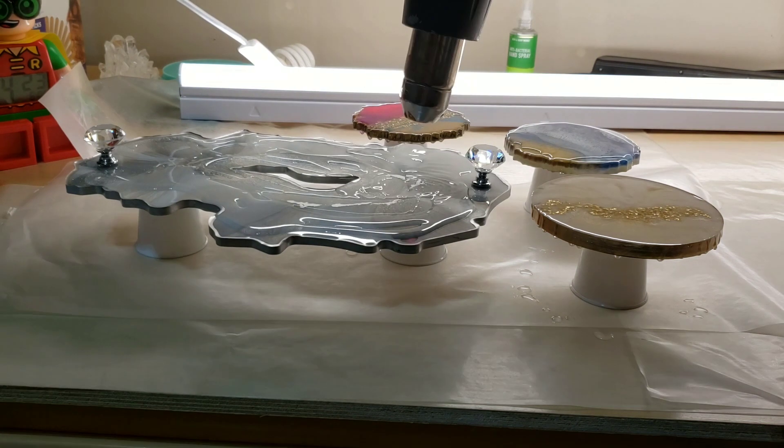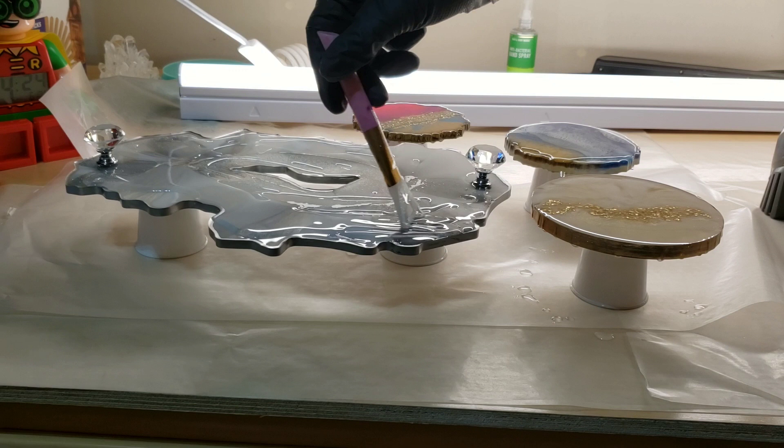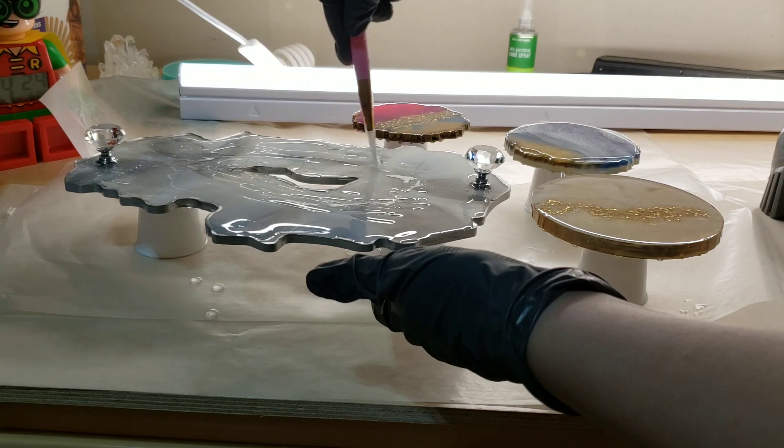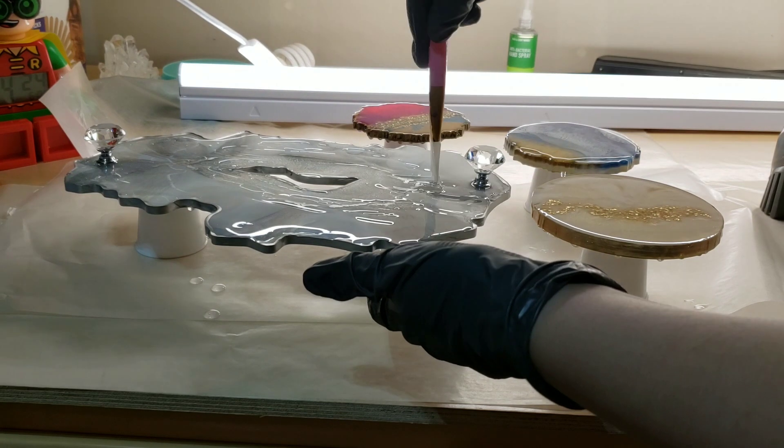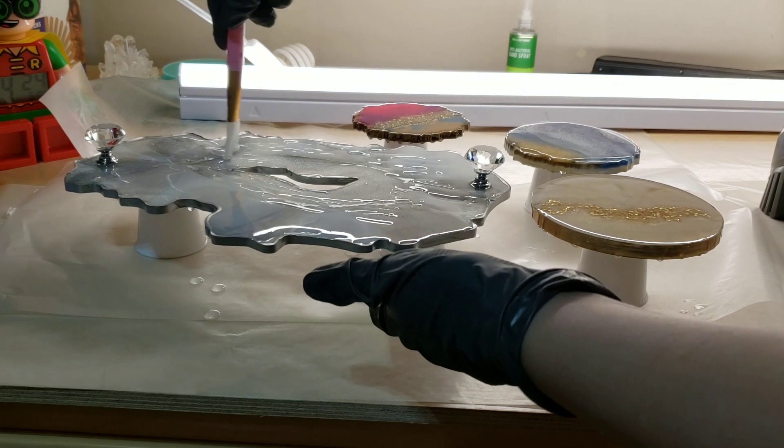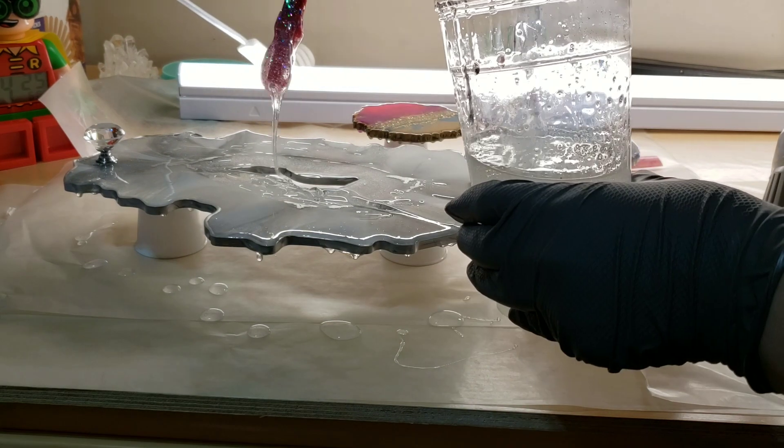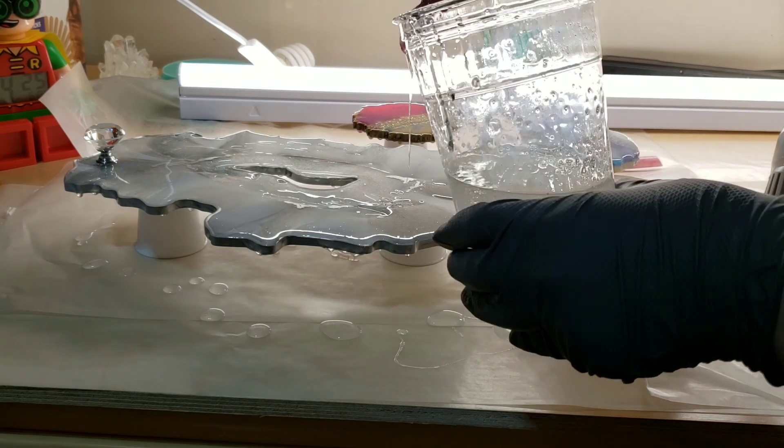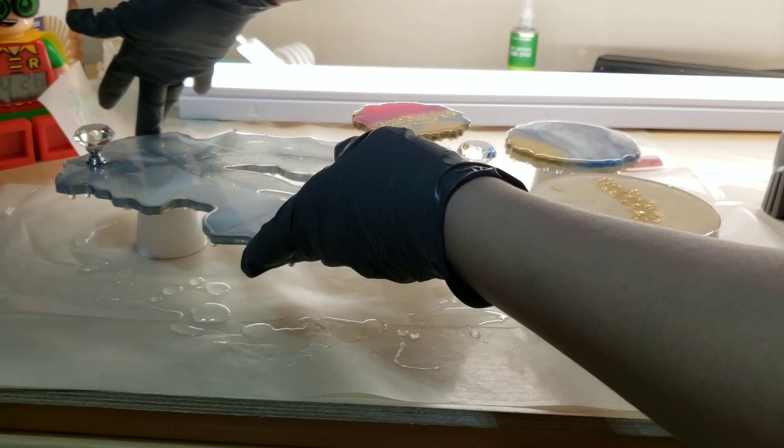Now I'm just going to go in with some clear resin. I'm using the KS Resin Liquid Stone for my top coat. I mixed it up off camera. I'm spreading it around with my little spatula tool and I'm also going to take my gloved hand and just smooth it around. Make sure everything has a nice even coat of resin and make sure I'm getting resin around those knobs so they're going to be nice and attached when the resin is cured.